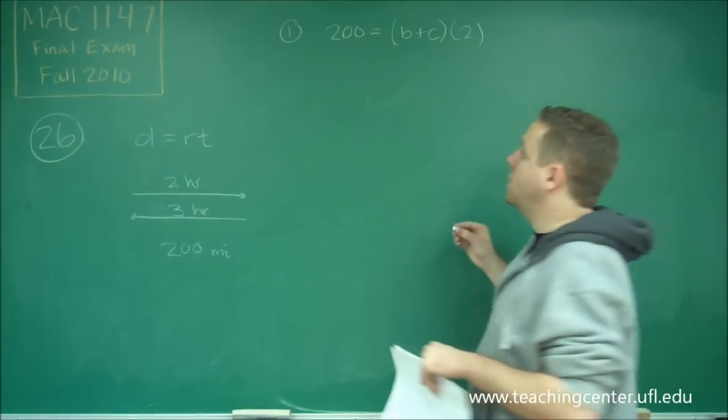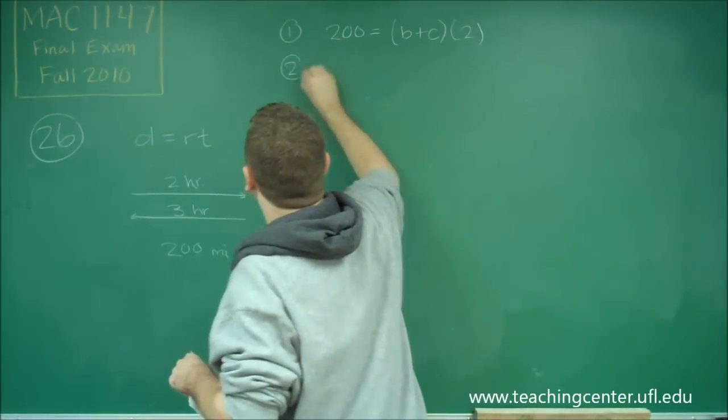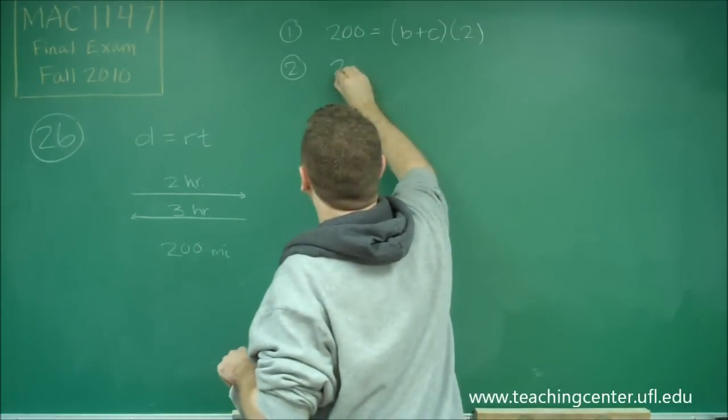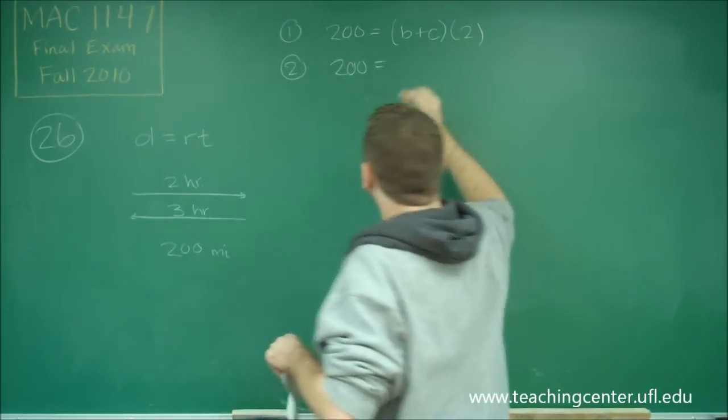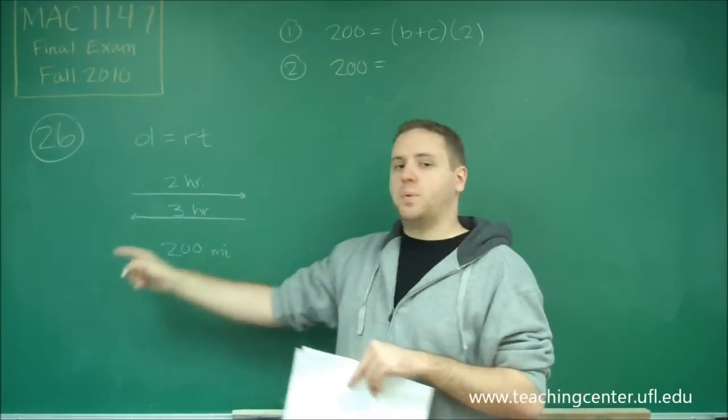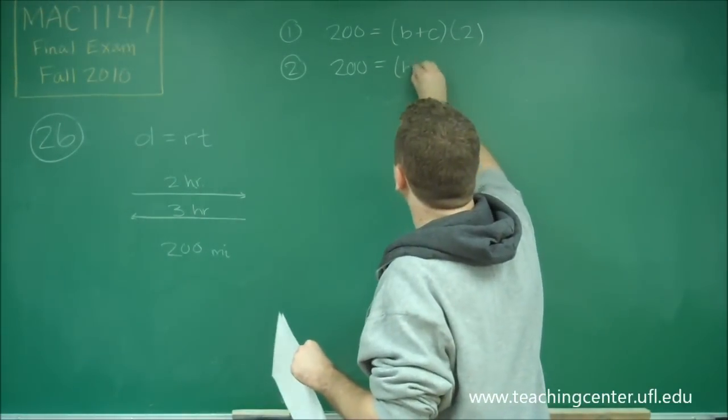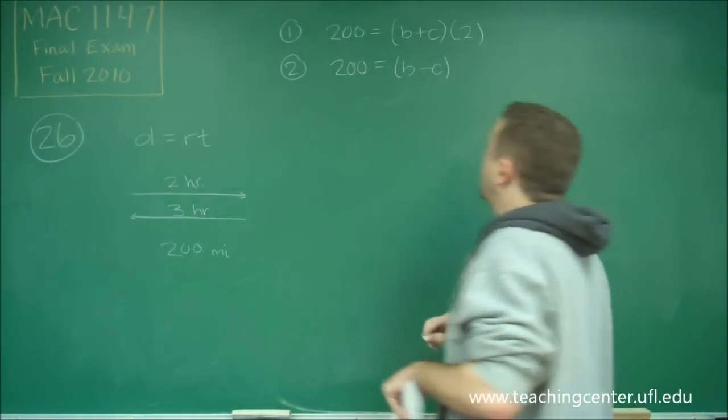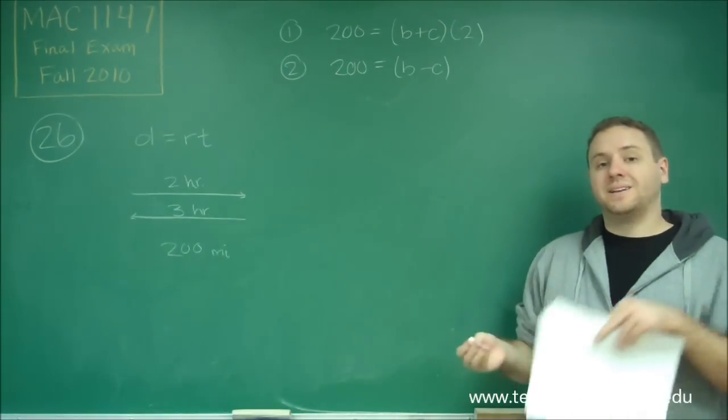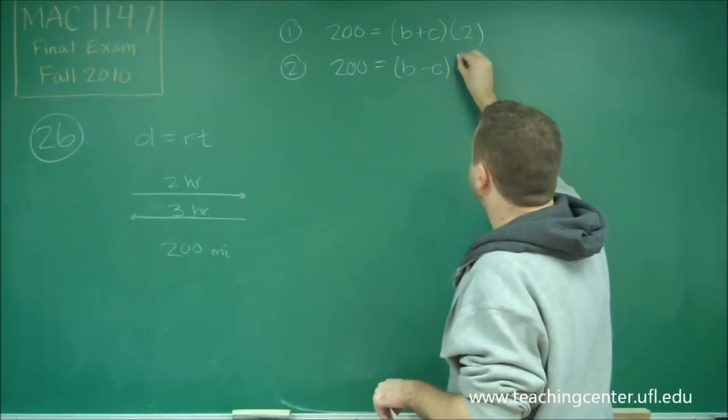So on the return trip, you also have, or trip two, let's call it, you also want 200 miles. But now, your boat is going against the current, so your actual speed is going to be B minus C. Because the current is going against your boat. And that trip took three hours.